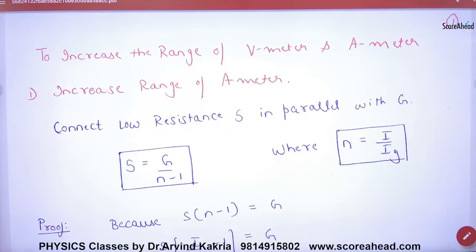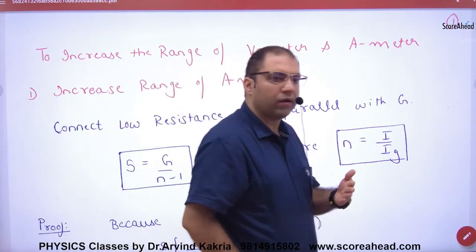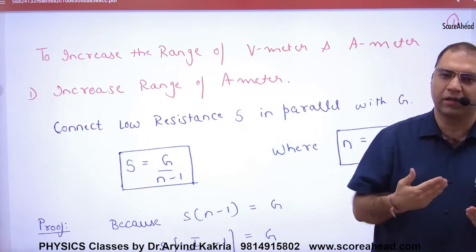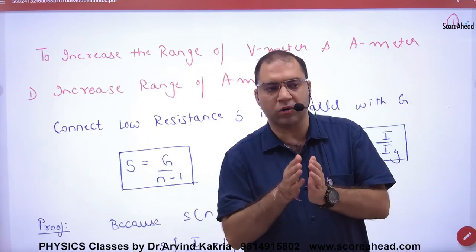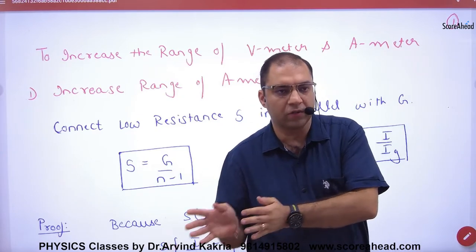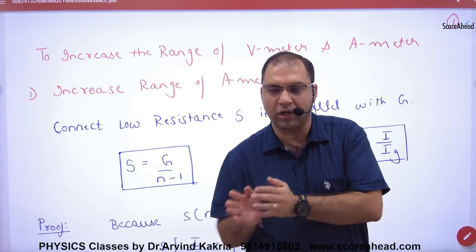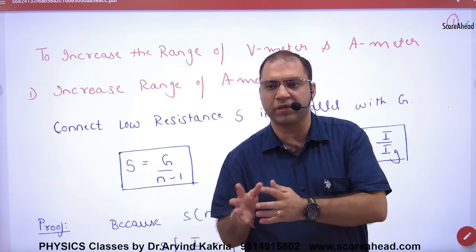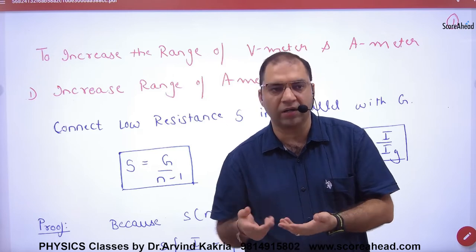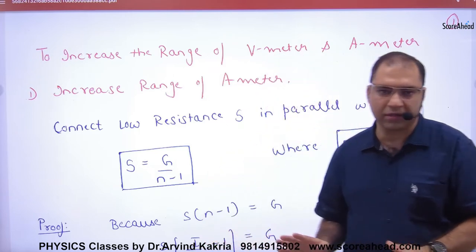In galvanometer, we discussed that if there is a galvanometer and we want to make it an ammeter, then we put a low resistance shunt in parallel. And if we want to make it a voltmeter, then we put a high resistance R in series. We discussed this last time.